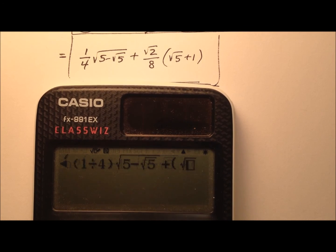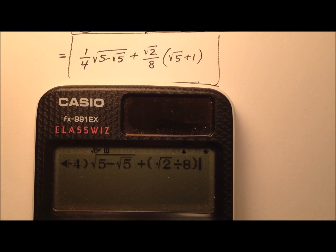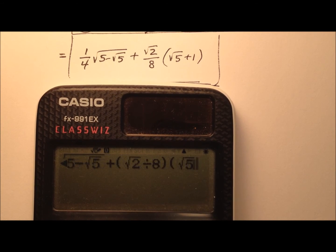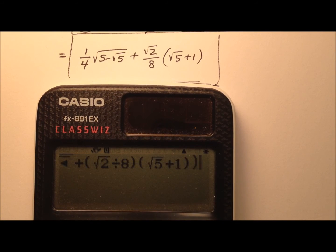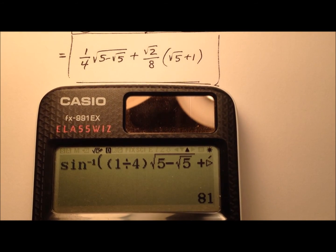To that, we'll add, it looks like we have the square root of 2 divided by 8, and we're going to multiply that by the square root of 5 plus 1. Close off all those parentheses, and yeah, 81 degrees. Very good.